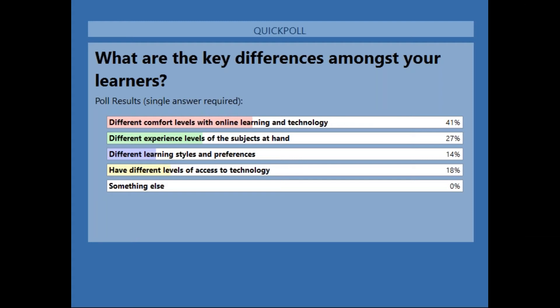Results: 41% said different comfort levels with online learning and technology — our biggest response. 27% said different experience levels of the subject at hand. 14% said different learning styles and preferences — a follow-up question: do you actually know your learners' styles? 18% said different levels of access to technology, which can be a real challenge — sometimes the best-laid plans are cut down by an IT team unwilling to make changes. Nobody went for something else.